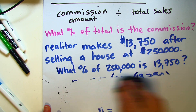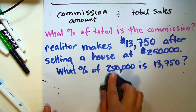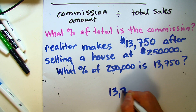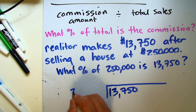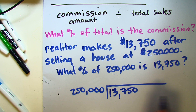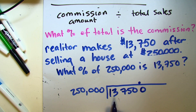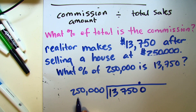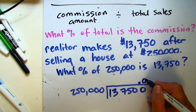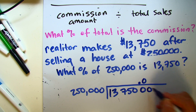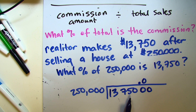Let's go ahead and work through the problem. We're going to divide thirteen thousand seven hundred fifty by two hundred fifty thousand. Now this amount is smaller than this one, so we need to bring up our decimal point and add zeros. We can now read this as one hundred thirty seven thousand five hundred. It is still smaller than two hundred fifty thousand, so I'm going to put a zero in the first position after the decimal point. Adding another zero, we can now read this as one million three hundred seventy five thousand.